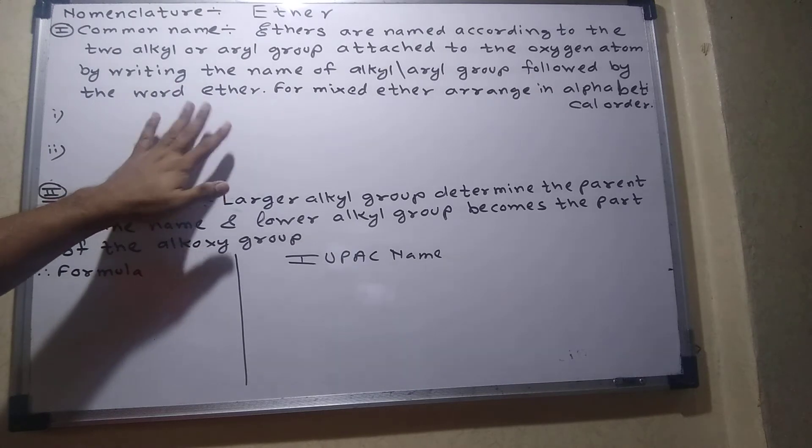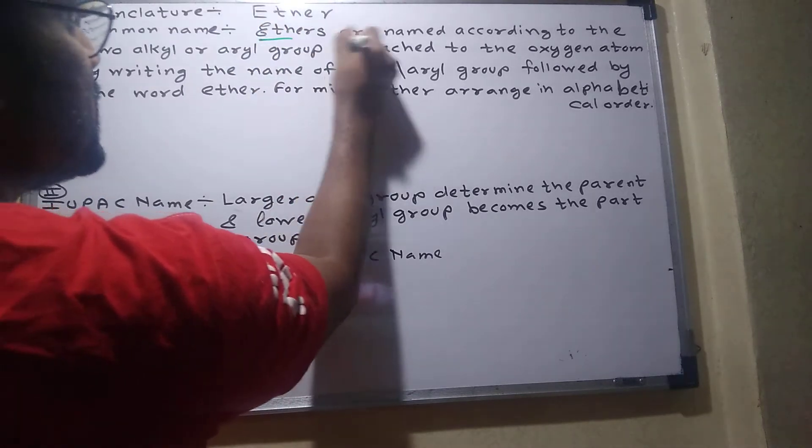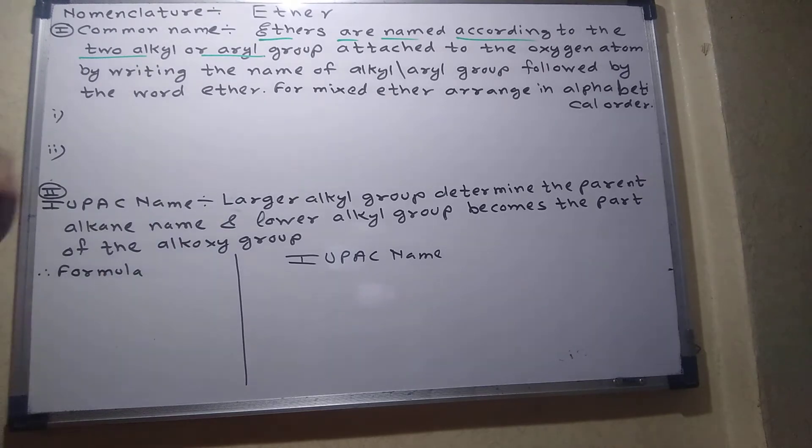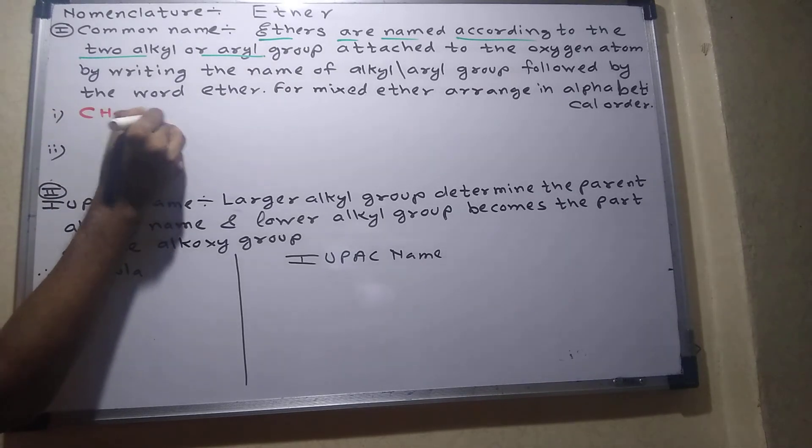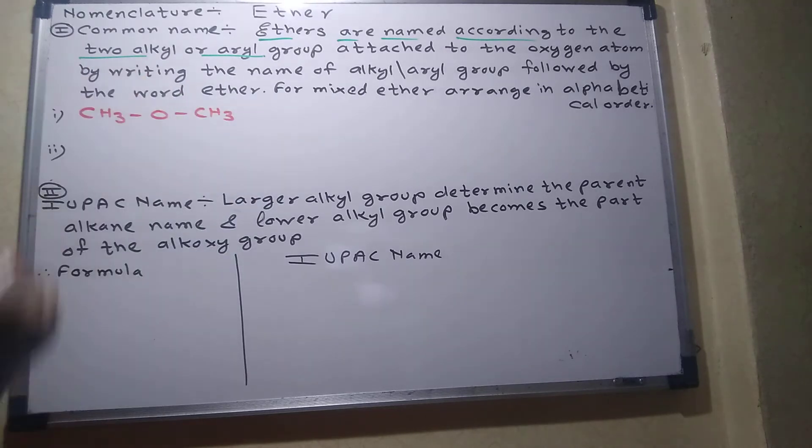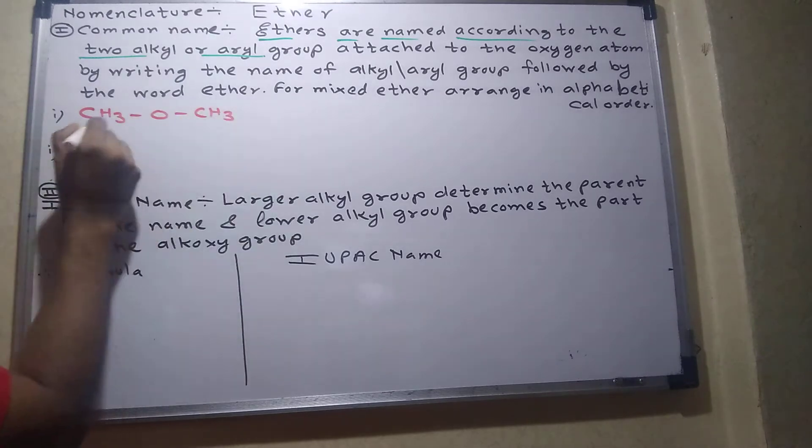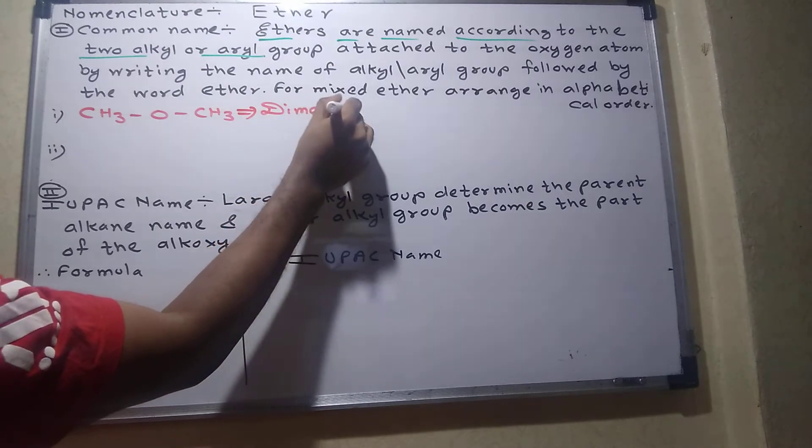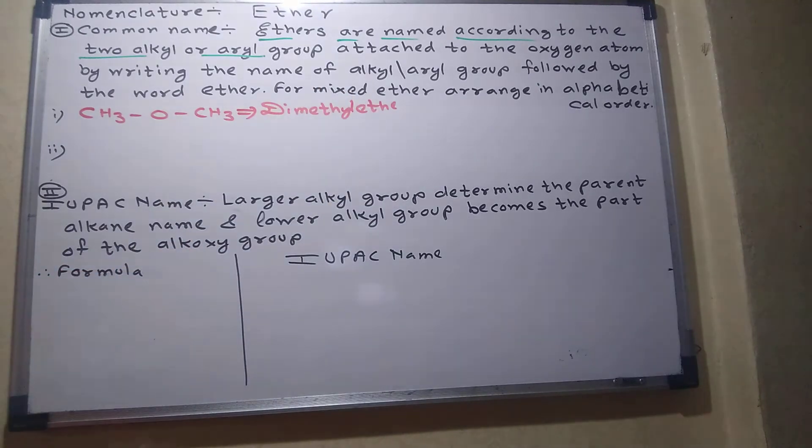So first, let's look at common name and then IUPAC name. So what is given in common name? Ethers are named according to two alkyl or aryl groups. We will take the example. For example, if I take here CH3-O-CH3, what is the name? Methyl-methyl ether. Since there are two methyl, it is called dimethyl ether.